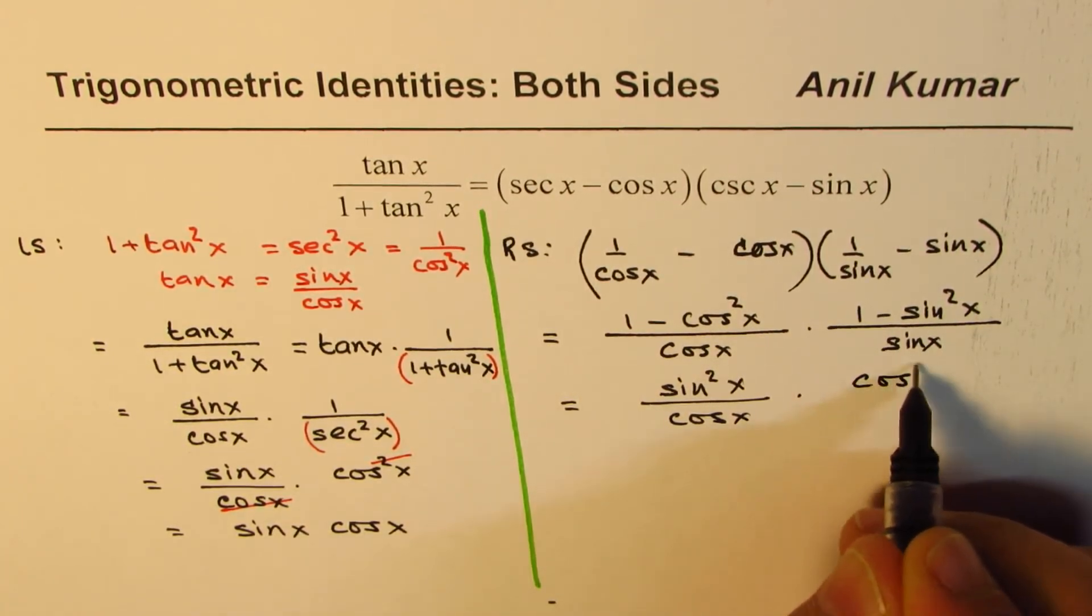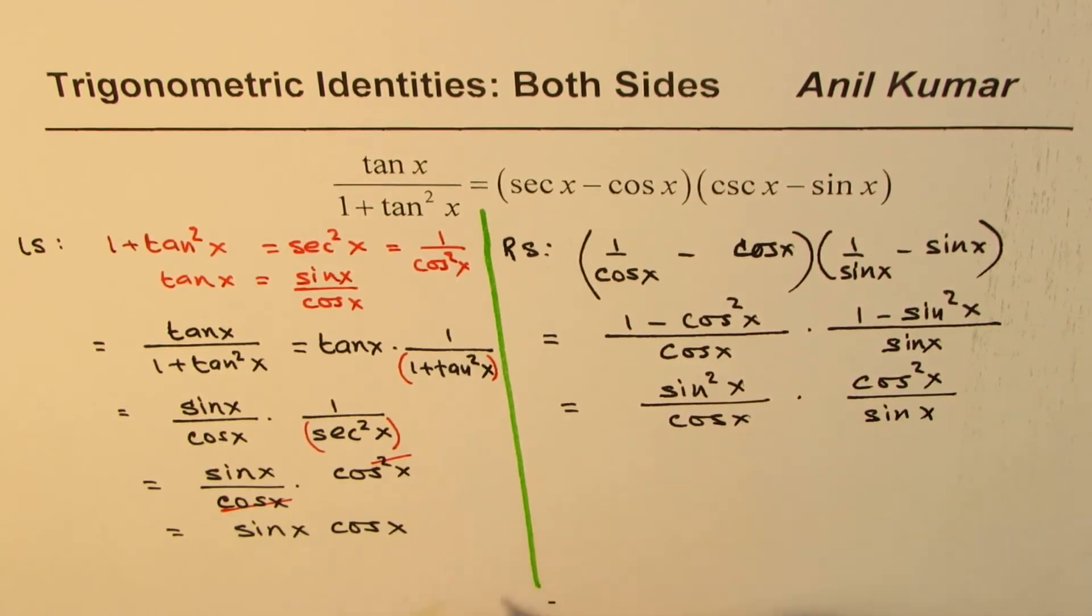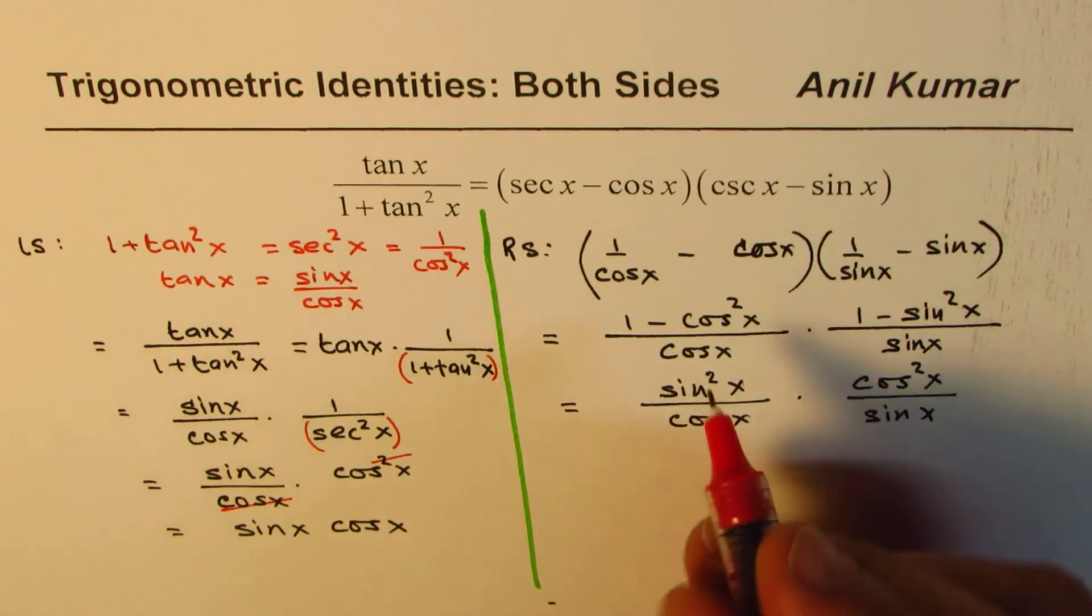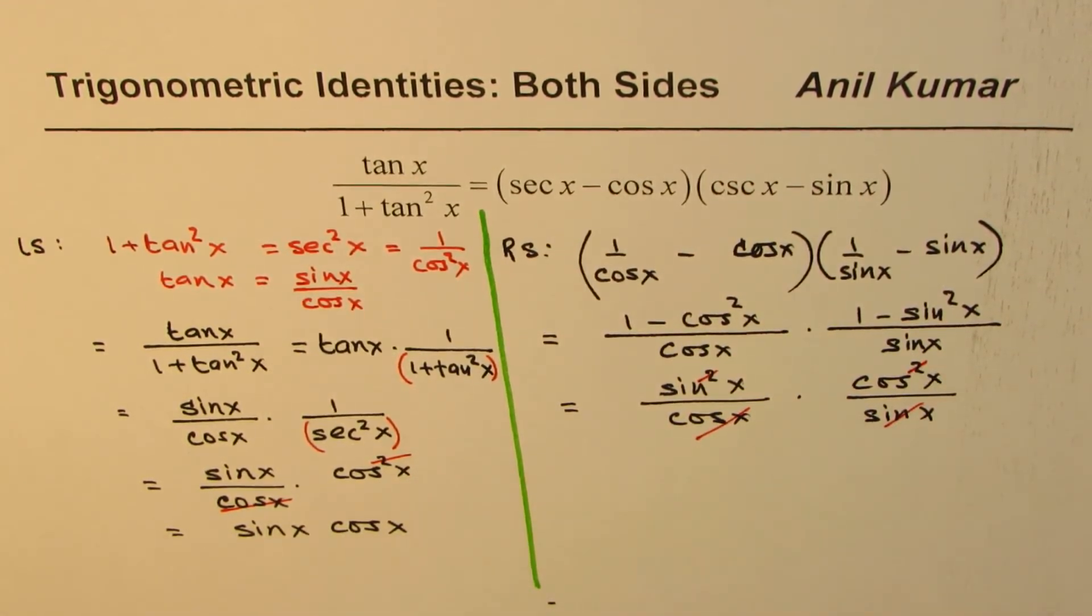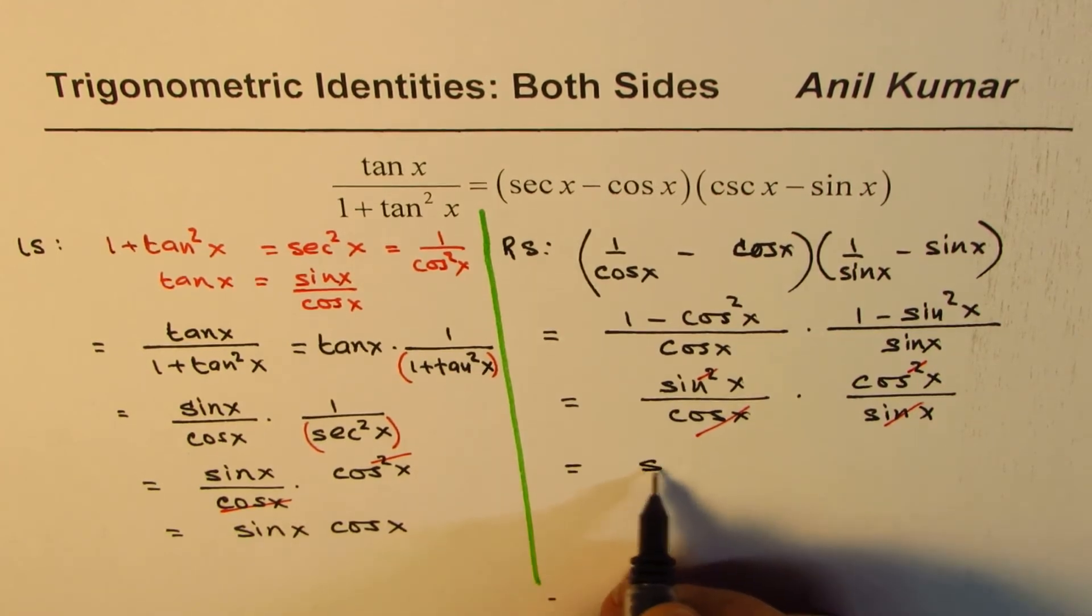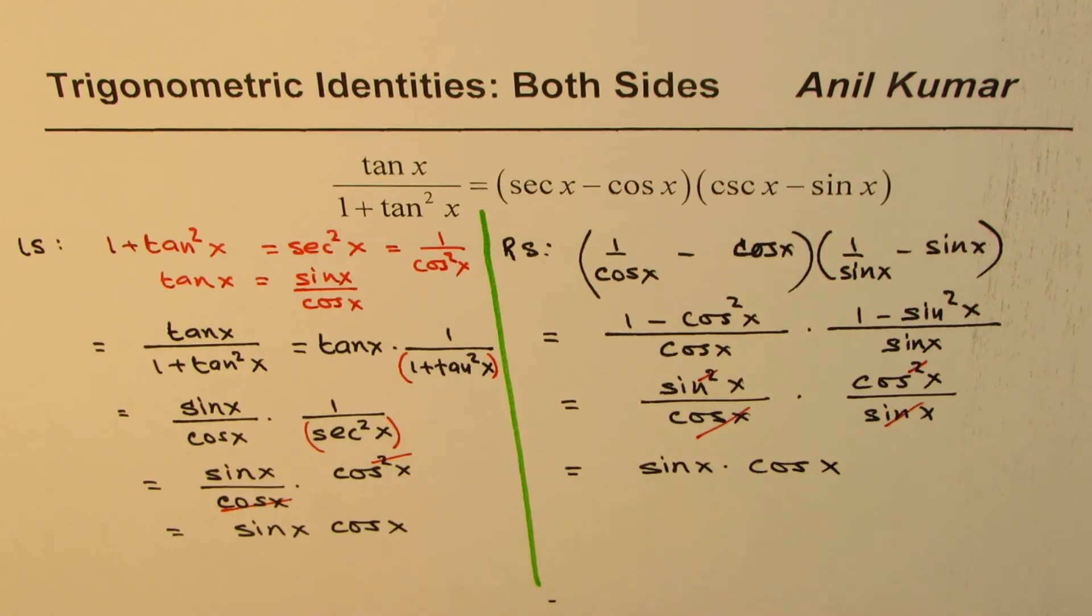Now that cancels, this cancels, what are you left with? You are left with sin x times cos x, you see that? So what we have derived is both left side and right side independently are equal to sin x times cos x.